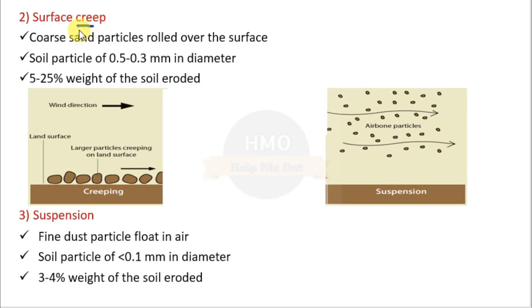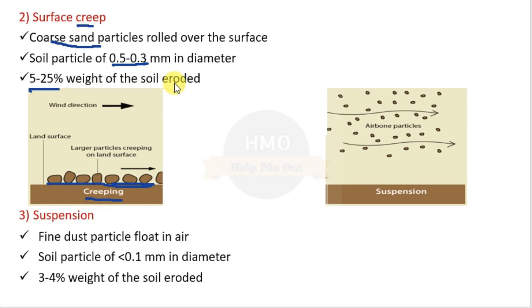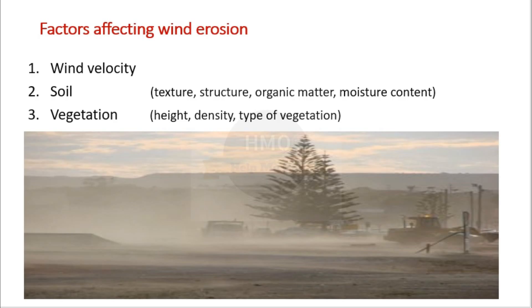In surface creep, coarse sand particles with diameter 0.5 to 0.3 mm roll over the surface because they are large and heavy — they creep instead of jumping, accounting for 5–25% of eroded soil weight. In suspension, fine dust particles float in the air due to their light weight and small size, accounting for only 3–4% of eroded soil weight.